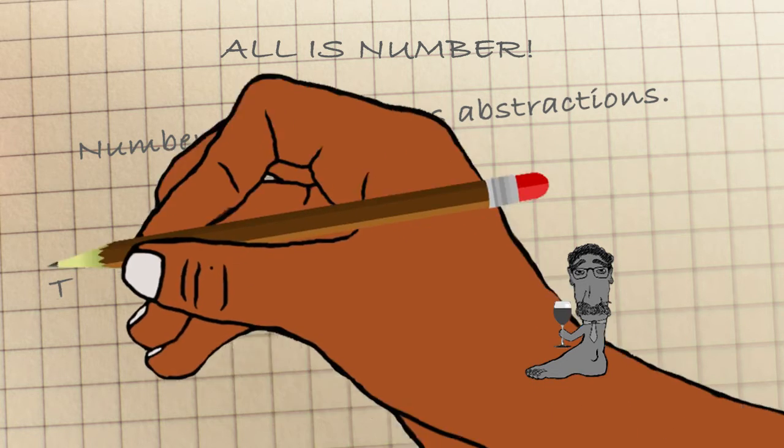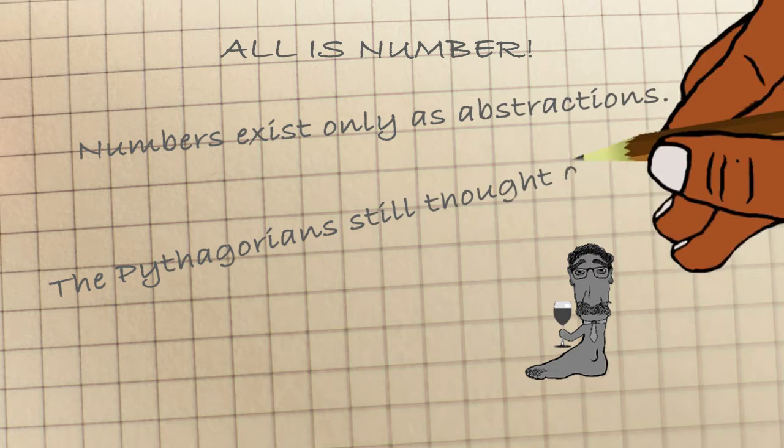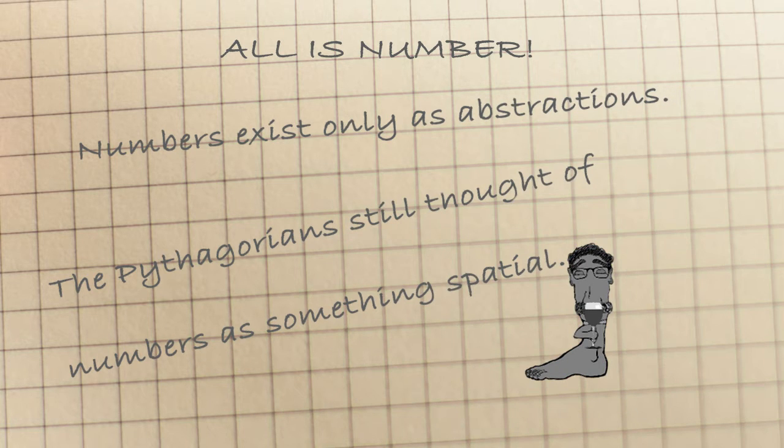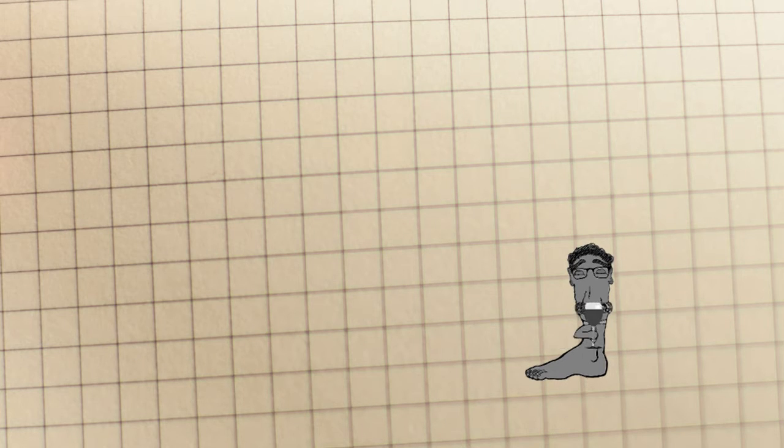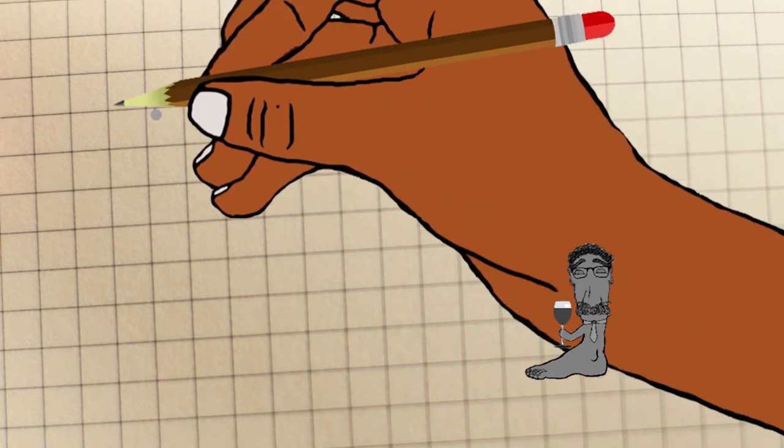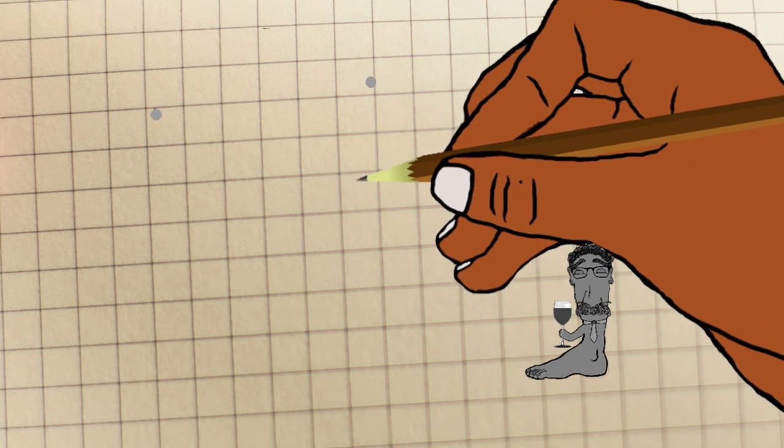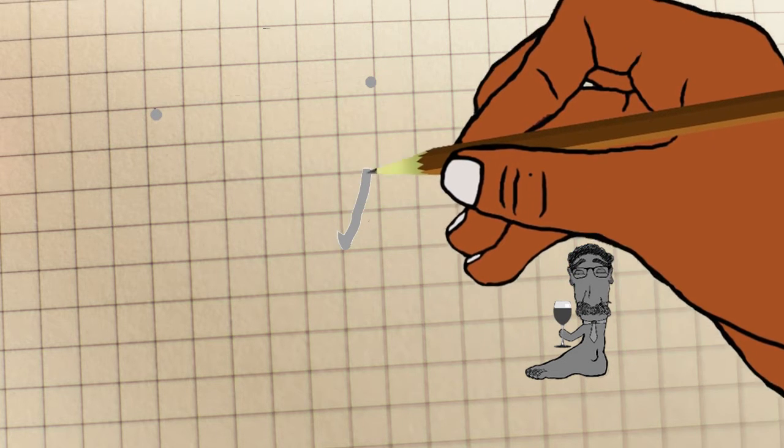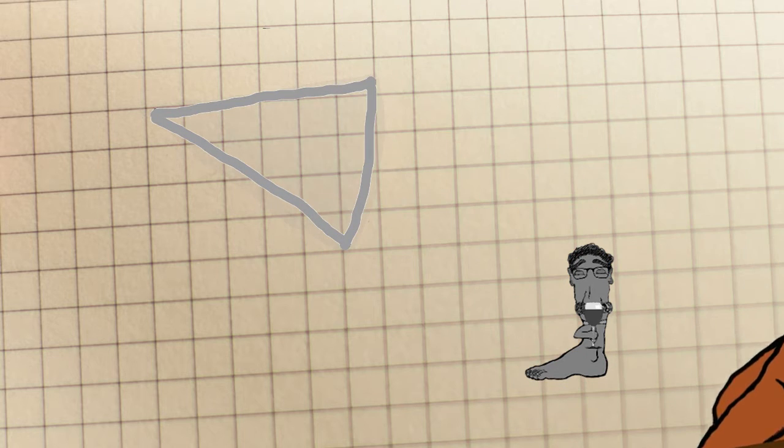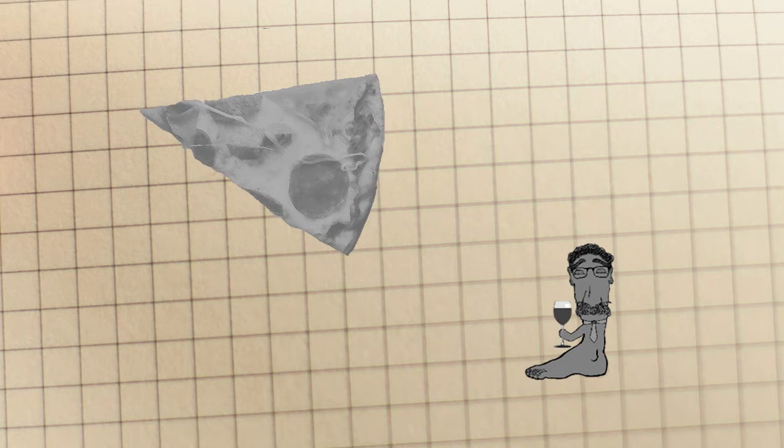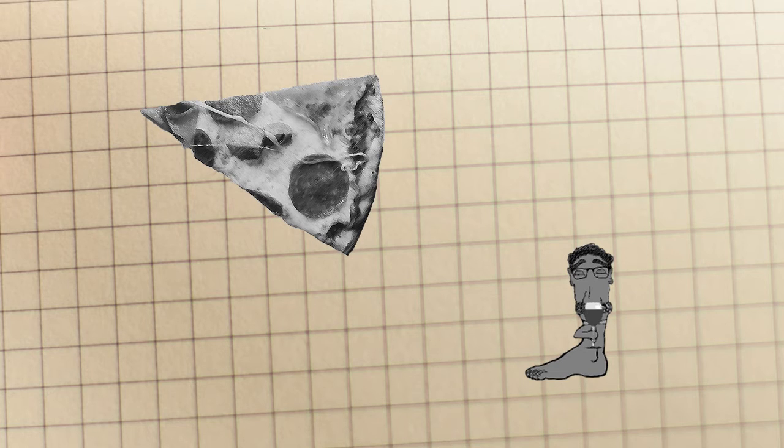They regarded numbers as the principle of all things, but also as something extended in space. They represented numbers as dots. This is number 1, this is number 2, and this is 3. You connect these dots and you get a triangle. So number 3 is materially present in things that have triangular shapes in them.